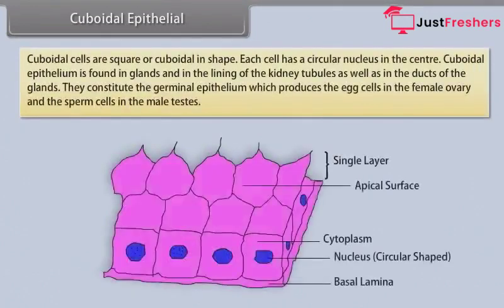Cuboidal epithelial cells are square or cuboidal in shape; each cell has a circular nucleus in the center. Cuboidal epithelium is found in glands and in the lining of the kidney tubules, as well as in the ducts of the glands. They constitute the germinal epithelium, which produces the egg cells in the female ovary and the sperm cells in the male testes.